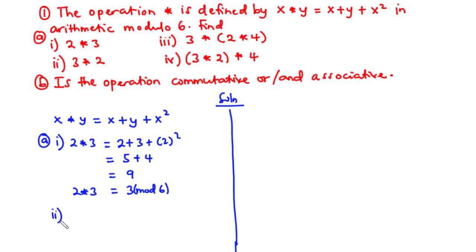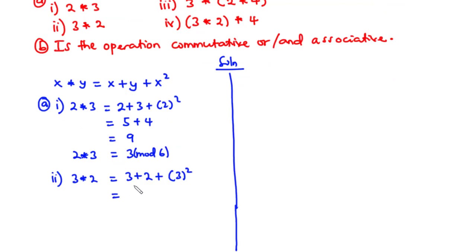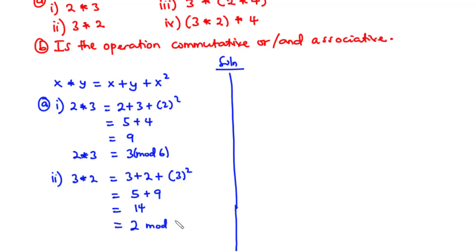For part (ii), we solve 3 star 2. Using the same binary operation, x is 3 and y is 2. So we have 3 plus 2 plus 3 squared. 3 plus 2 is 5, and 3 squared is 9, so 5 plus 9 is 14. Since 14 is greater than 6, we divide 14 by 6: 6 times 2 is 12, giving 2 remainder 2. So the answer is 2 mod 6.